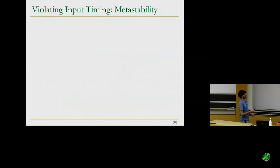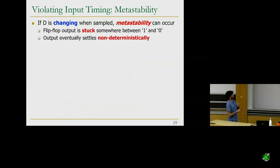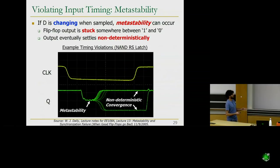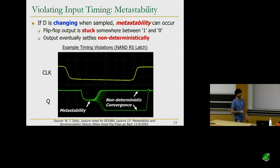If we violate these timing requirements, we enter metastability. If D is changing when sampled, the flip-flop output gets stuck somewhere between 1 and 0 for a while, then converges non-deterministically to either 1 or 0. Here's a real-world illustration from a NAND RS latch: the clock signal is shown in yellow and Q output in green. When input timing was violated, Q went metastable — neither 0 nor 1, somewhere in the middle — then converged to 0 or 1 non-deterministically across trials. This is unpredictable and must be avoided.